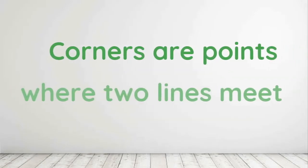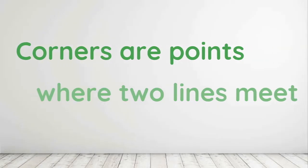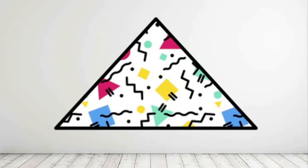Corners are points where 2 lines meet. A triangle has 3 corners: 1, 2, 3.